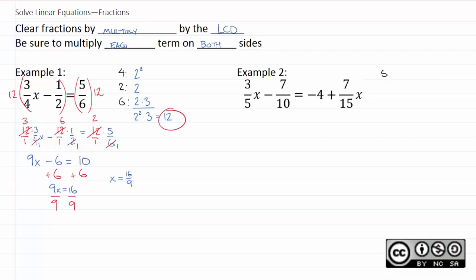Again, if you ever don't know how to do that, it always works to prime factorize all three numbers and just find the simplest thing that contains all of the above.